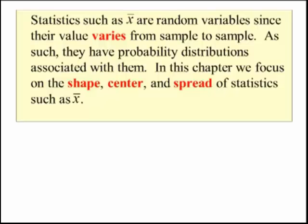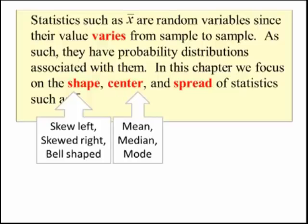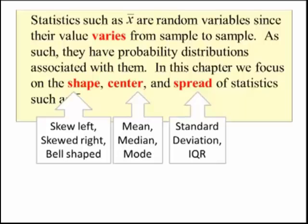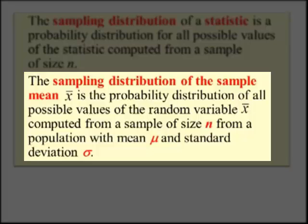Shapes can be described as skew left, skew right, and bell-shape. We measure the center by the mean, median, or mode, and we measure spread by the standard deviation or the IQR. The sampling distribution of a statistic is the probability distribution of all possible values of the statistic computed from a sample of size n. The sampling distribution of the sample mean X-bar is the probability distribution of all possible values of the random variable X-bar computed from a sample of size n, from a population with mean mu and standard deviation sigma.